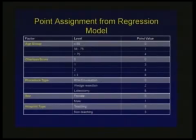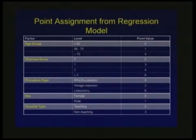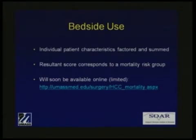For each of the variables — age group, for instance — each different category results in a different point assignment. The points assigned according to patient age range from 0 to 4. Similarly, for Charlson's score, an increasing degree of comorbidity corresponds to an increased point assignment. More invasive procedures score higher, as does male sex and performance of the procedure at a non-teaching hospital. For any given patient, his particular characteristics are factored in and summed, and the score can then be translated into a score group with its associated risk of in-hospital mortality.